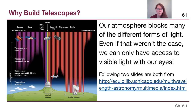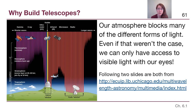There are a lot of different reasons why telescopes are important and useful. To start out with, we want to remind ourselves that not only are there so many different types of light than what our eyes are able to detect, but also a lot of those forms of light are blocked by our atmosphere. So in this chapter we'll be talking not just about ground-based telescopes, but also about space-based telescopes. One of the big reasons to build a telescope is to detect electromagnetic radiation, or light, that our eyes are unable to see.